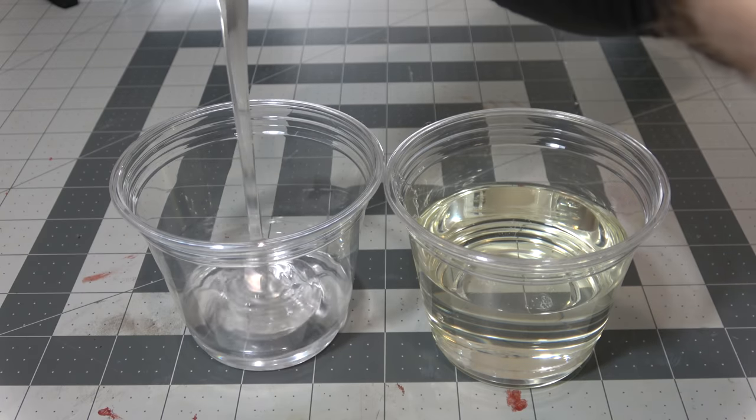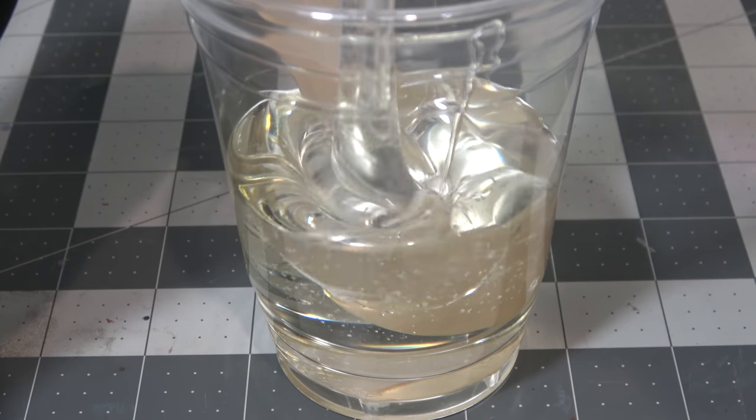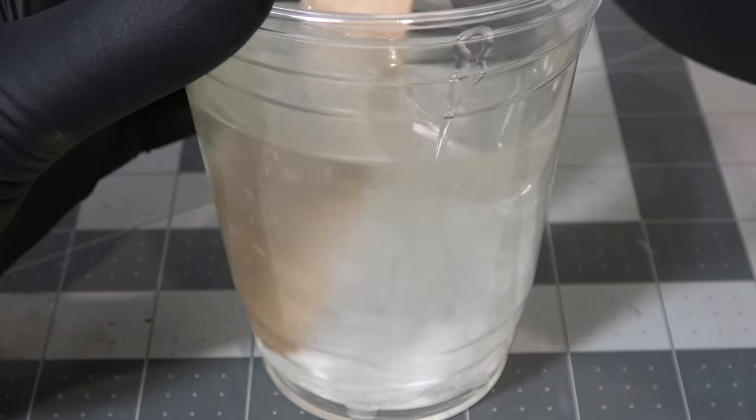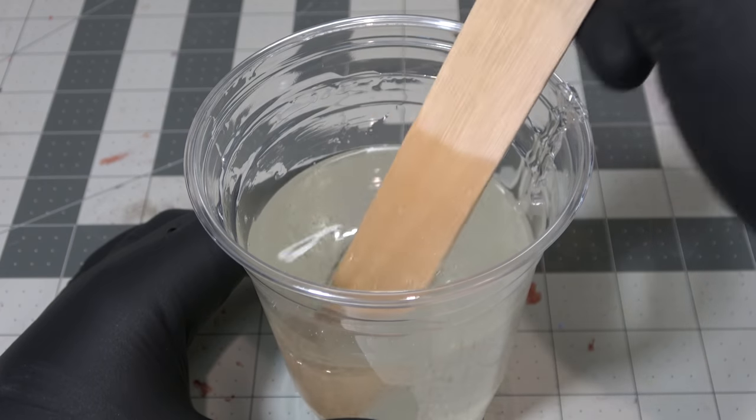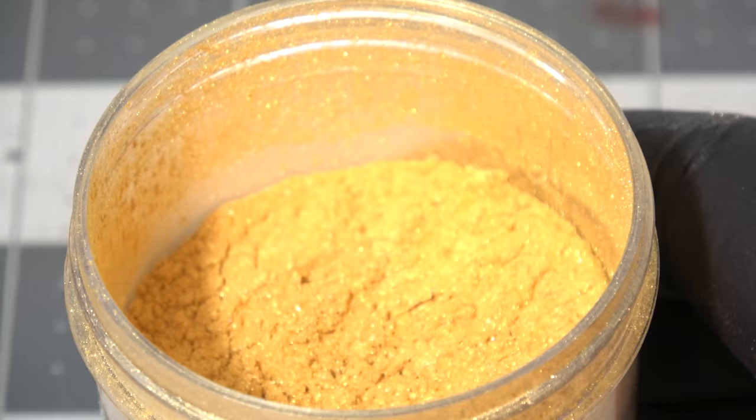We're going to need a lot of resin for this. One of my pet peeves with buying molds like this is they rarely tell you how much resin you need to complete your project. For your knowledge, it took me about 24 ounces of resin to make the entire board and chess pieces, but that was knowledge I had to figure out on my own.